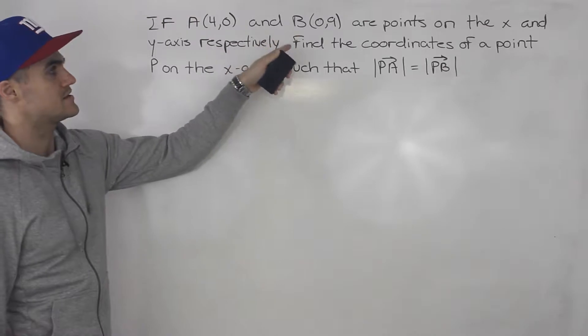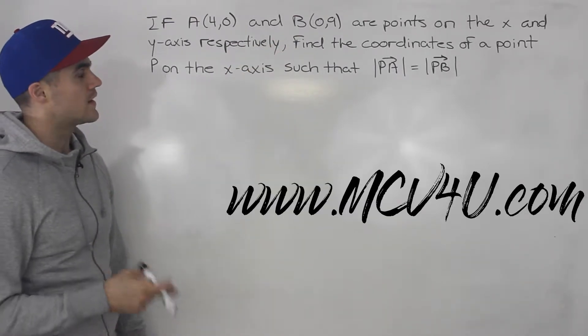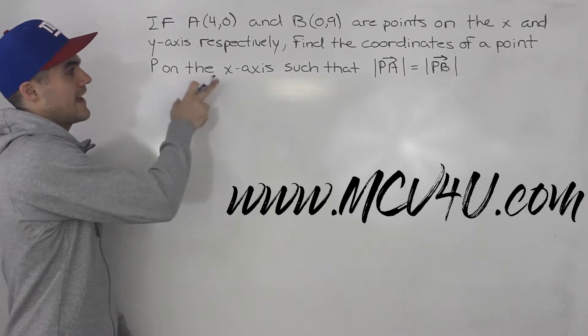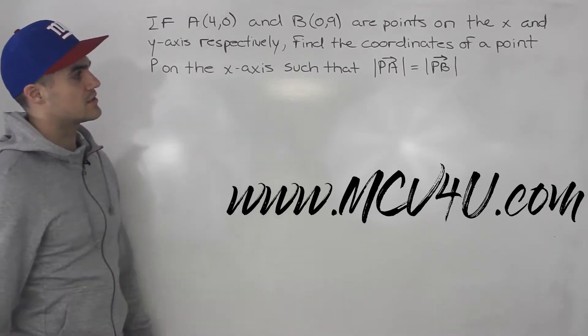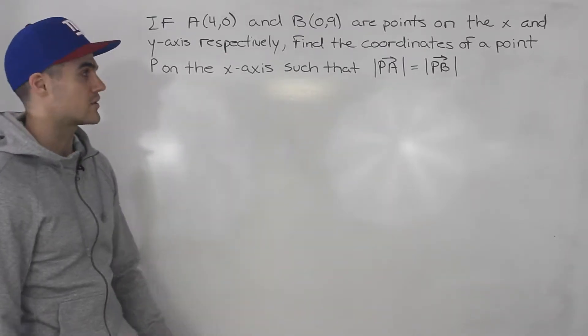If A(4,0) and B(0,9) are points on the x and y axis respectively, we need to find the coordinates of a point P on the x-axis such that the magnitude of vector PA equals the magnitude of vector PB.